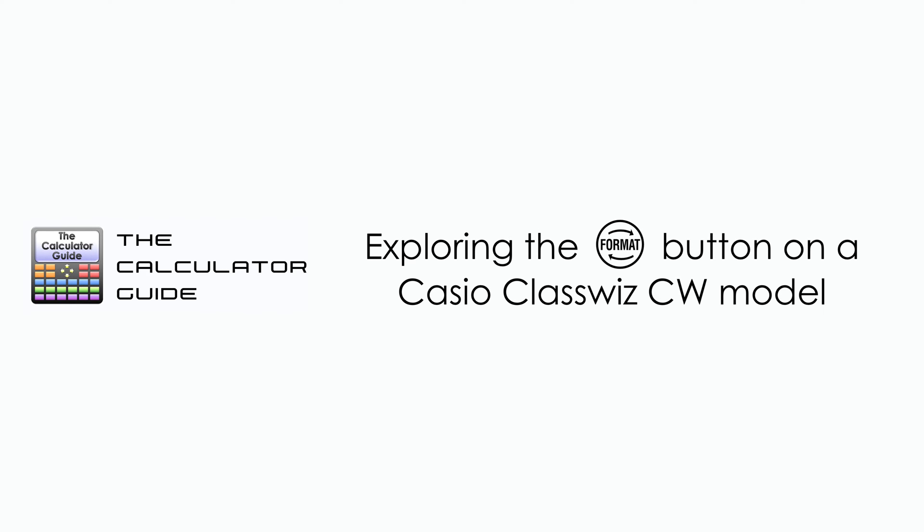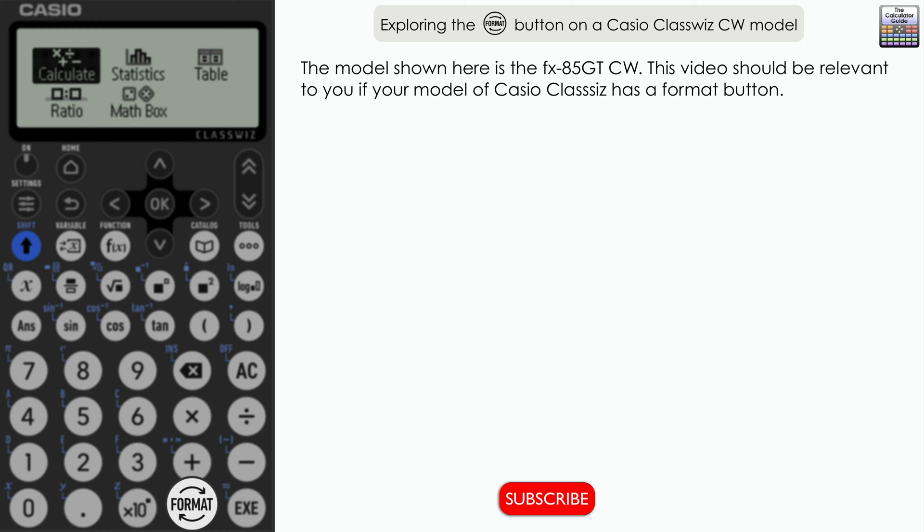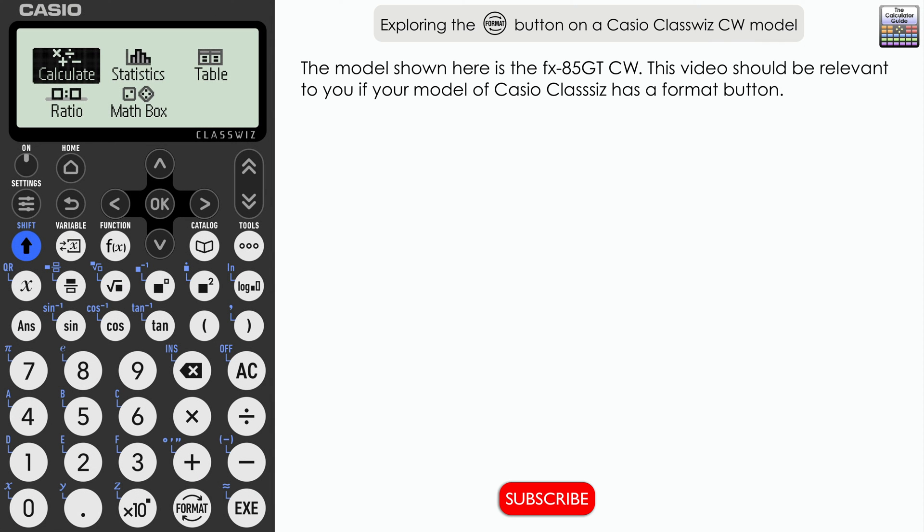Hello and welcome to the calculator guide video on exploring the format button on a Casio ClassWiz CW model. I'm using the fx-85GT CW model in this video. You may have that model or perhaps another model of ClassWiz CW calculator, possibly the fx-991CW or similar model, or any model that has the format button. This video should be relevant for you and I will point out any differences that I'm aware of as we go through.